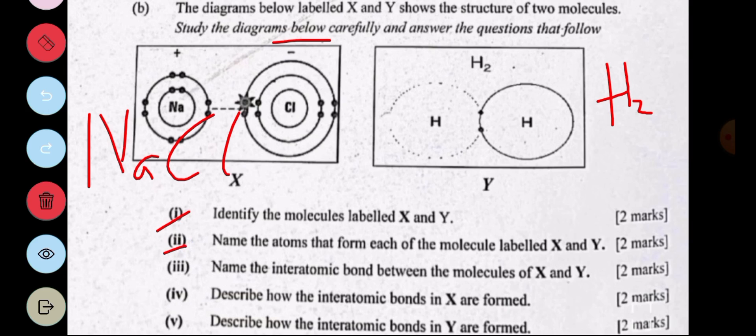Part II, name the atoms that form each of the molecules labeled X and Y. The atoms that make up X are sodium and chlorine. And the atoms that make up Y are hydrogen and hydrogen, so two atoms of hydrogen.